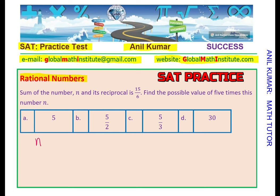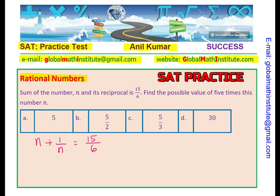As the equation says, the sum of a number n and its reciprocal means n plus 1 over n equals 15 over 6. That is the equation from this part of the sentence. Now you want to find the possible value of 5 times n — so you need to find what 5 times n equals, not just the value of n. Otherwise you get the wrong answer.